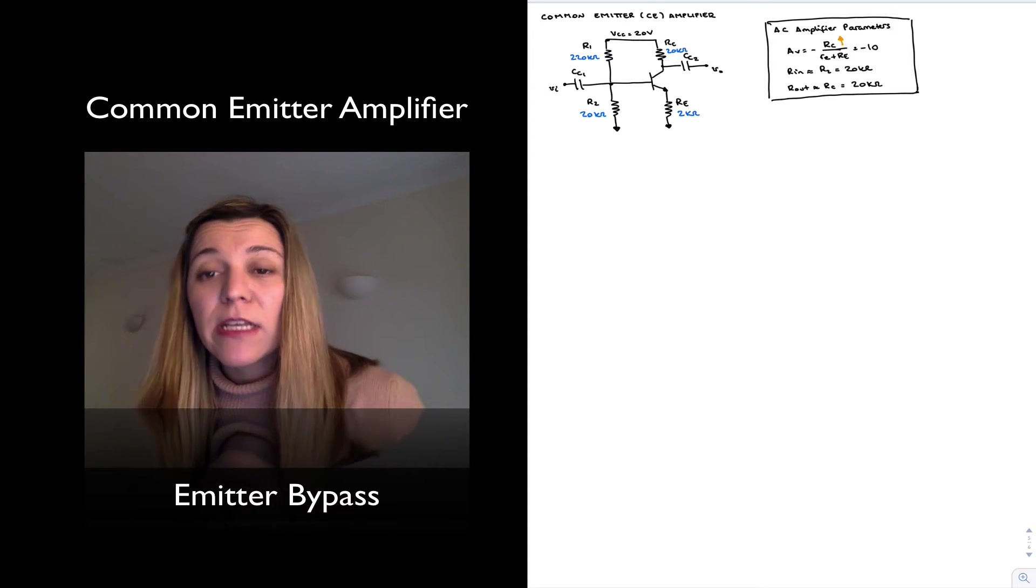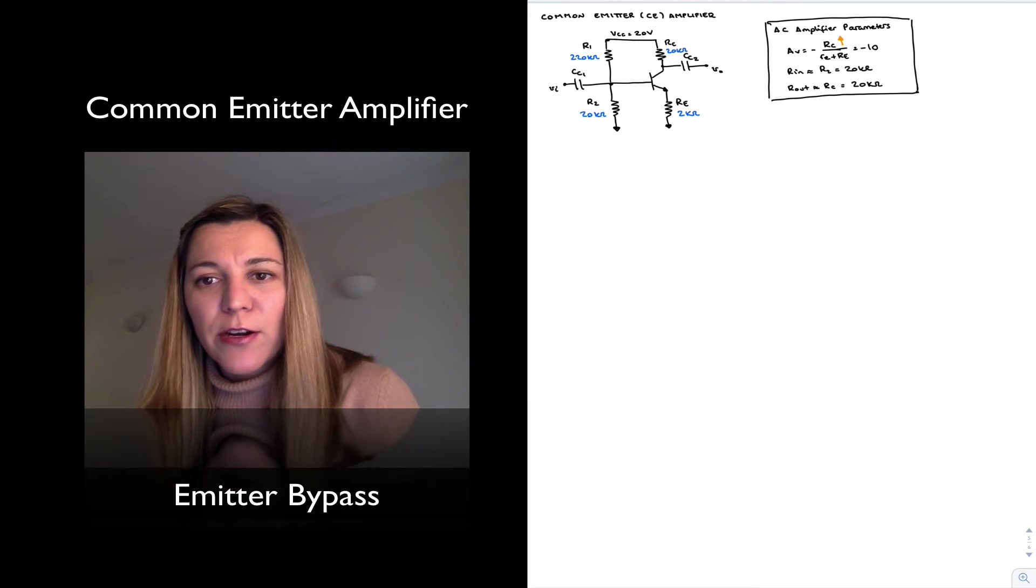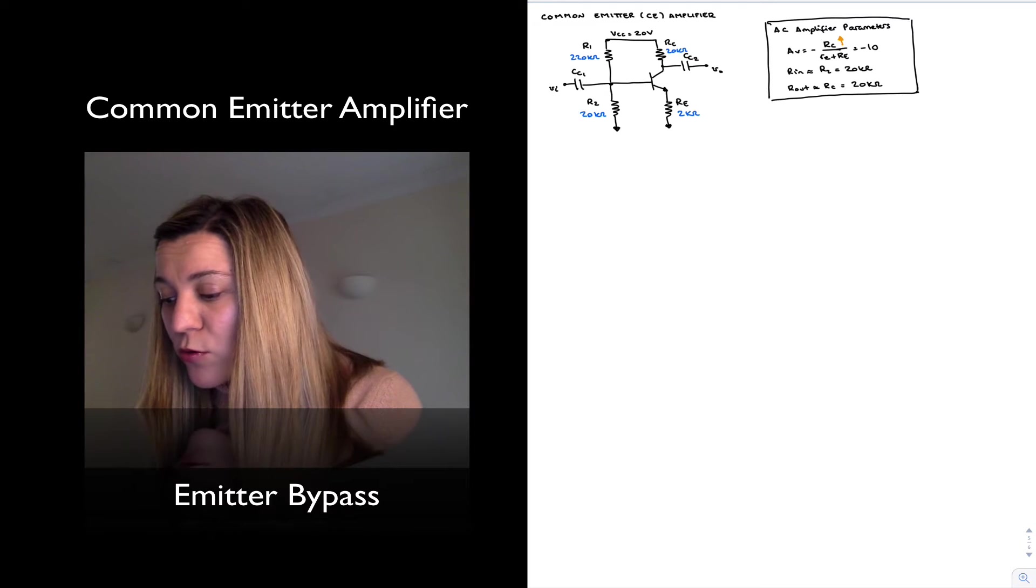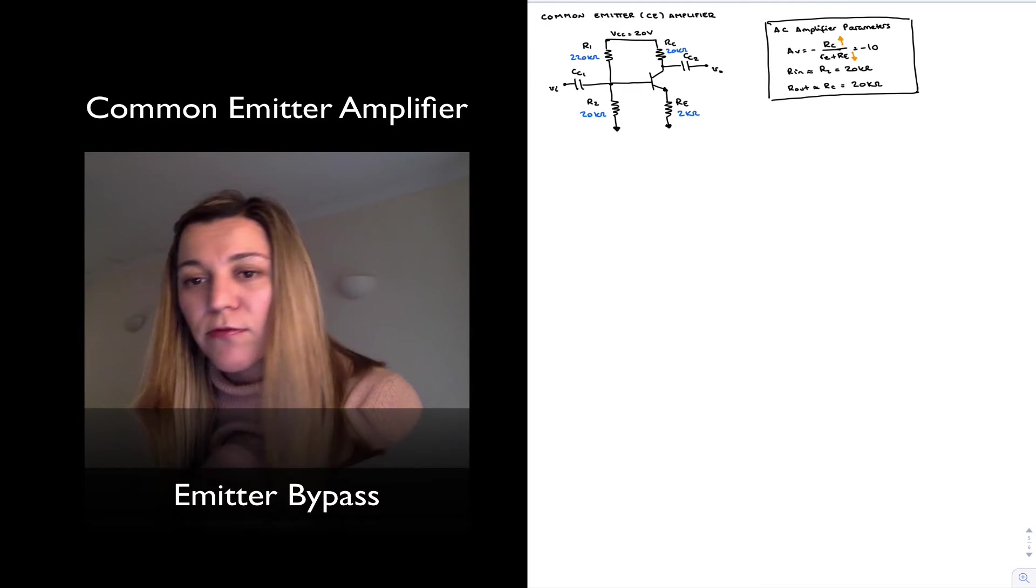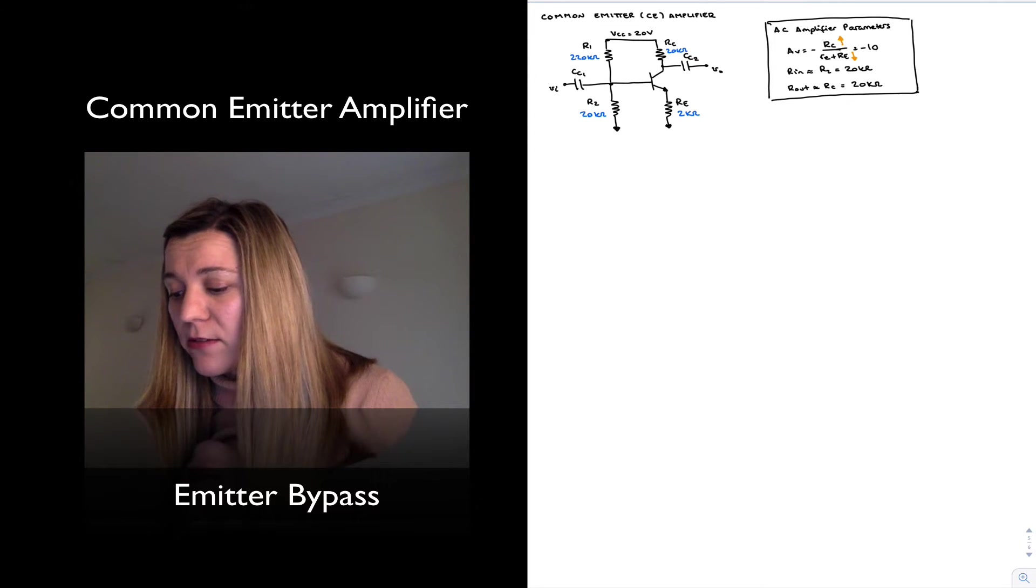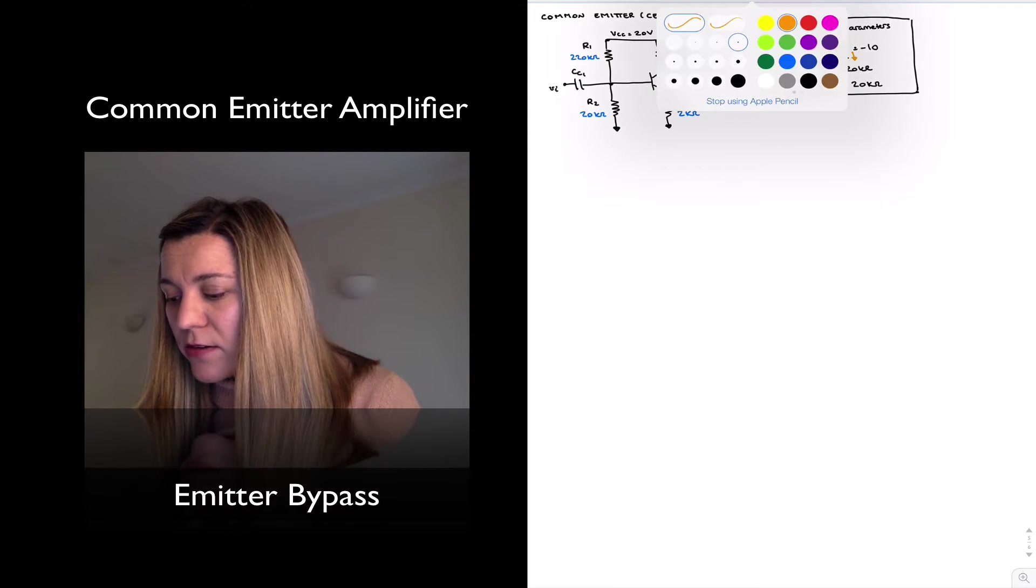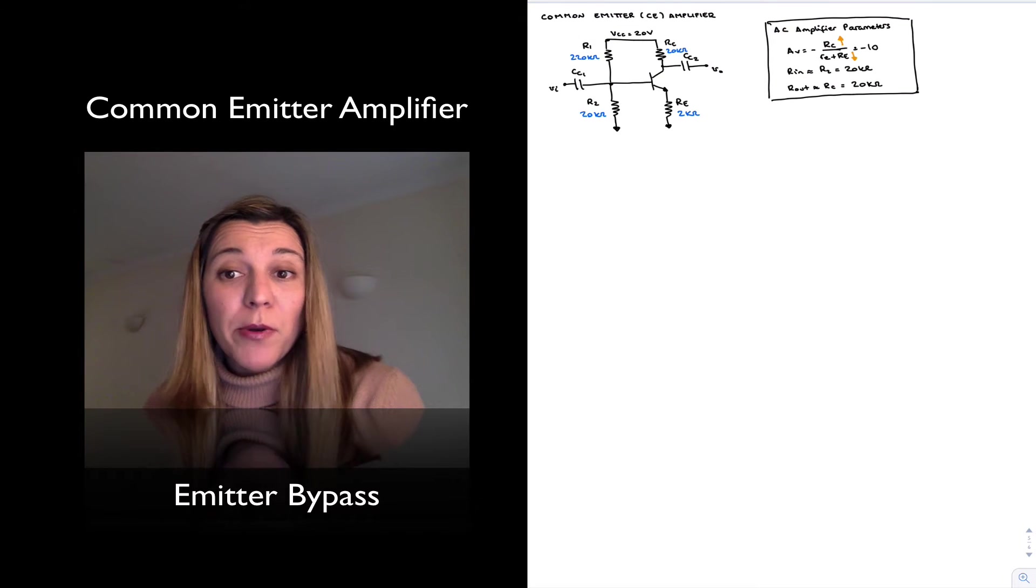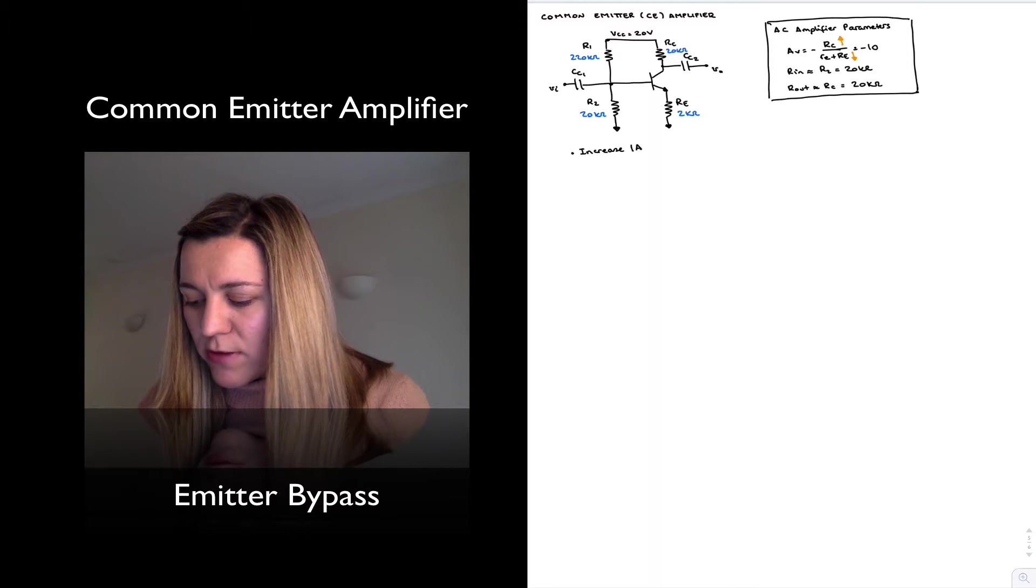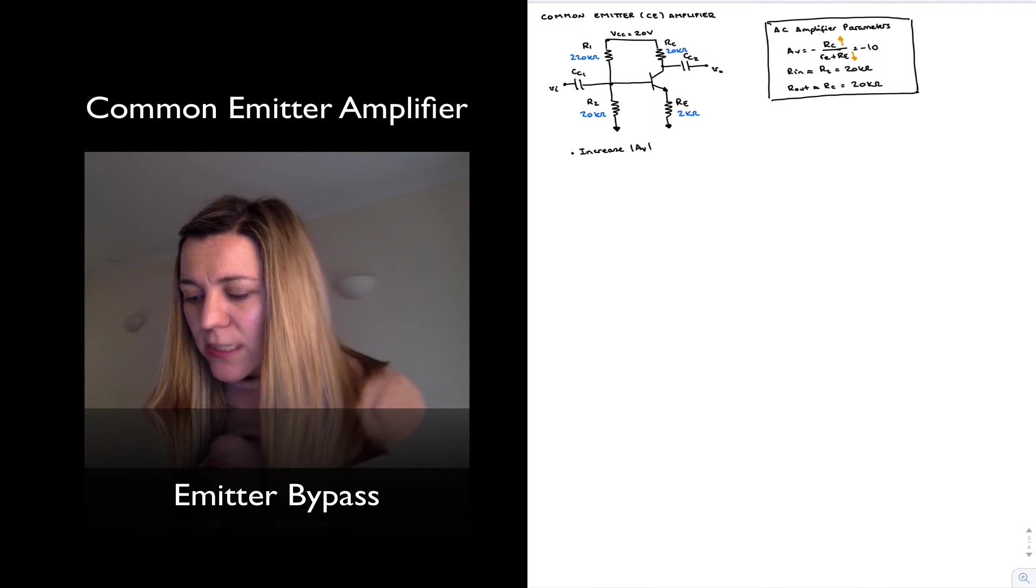If we modify little RE, it's typically much smaller than big RE, and so any changes to little RE are not going to yield a very visible result in the gain. But we could decrease the value of the emitter resistor RE, and that might increase our gain. Now, what are the problems with those approaches to increasing the gain, or rather the magnitude of the gain, the voltage gain?